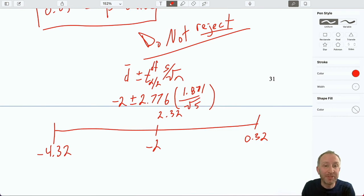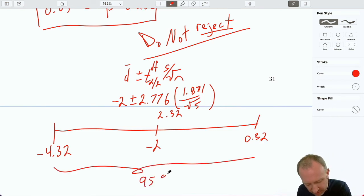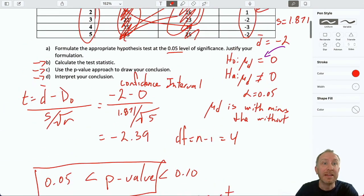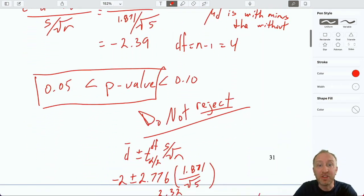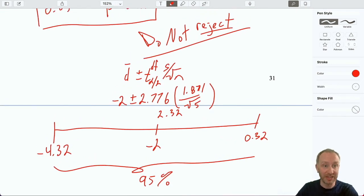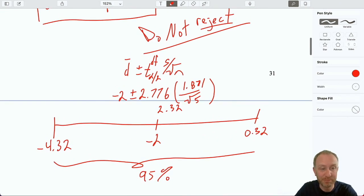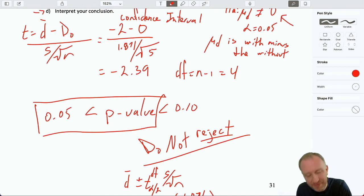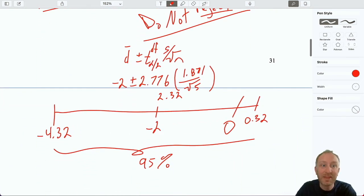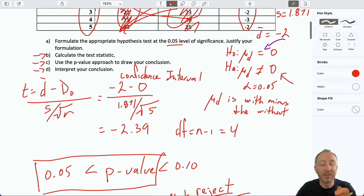So, we're 95% confident. Because again, that's a 95% interval. We're 95% confident that the true difference in the average fuel efficiency with or without the additive is between minus 4.3 and plus 0.32. What does this mean? Well, 0 exists within that interval. The fact that our hypothesized value exists within that interval, that is consistent with a failure to reject that null.